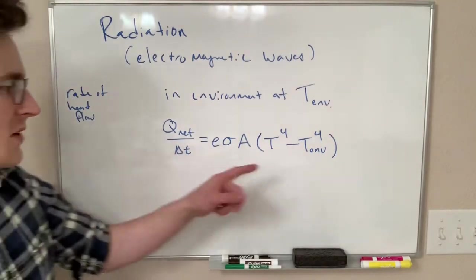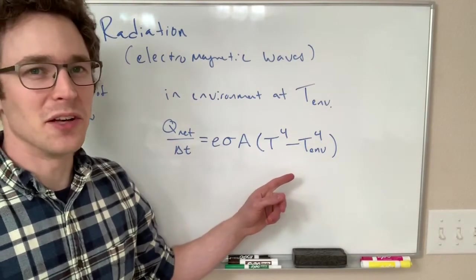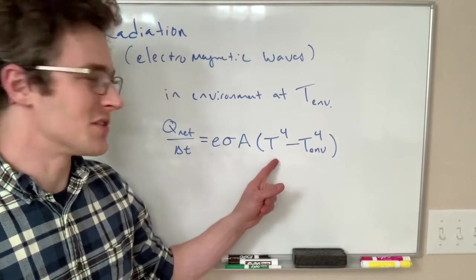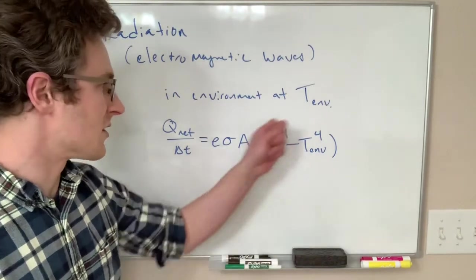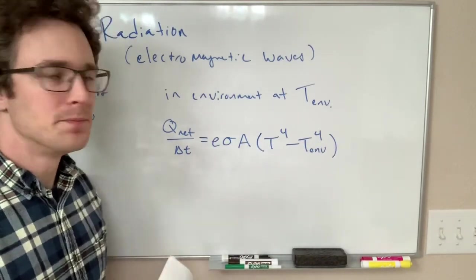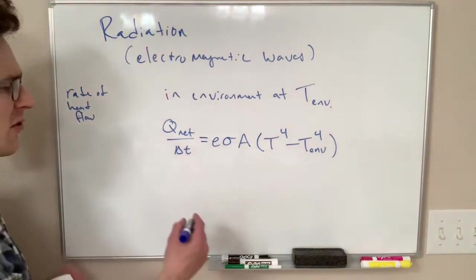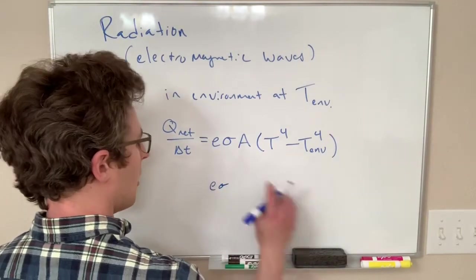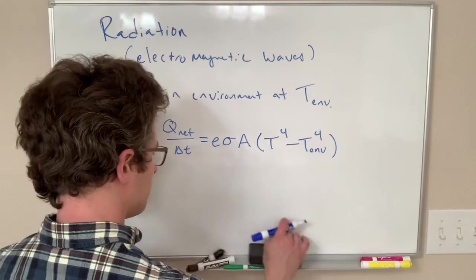So depending on what this temperature difference is, this is not just a delta T anymore, this is T to the fourth minus T to the fourth. So this looks a lot different than our conductivity. This T to the fourth thing is kind of a big deal. E sigma A T to the fourth.